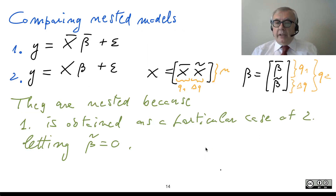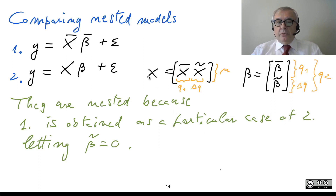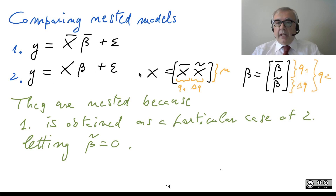We have a final topic to review: the comparison of nested models. I mean two models described by the same observation vector — the first is X-bar times beta-bar plus epsilon, and the second is X times beta plus epsilon. The second regressor matrix is larger than the first, being made of two sub-matrices.